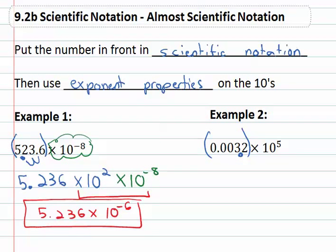The decimal should be after the first significant digit, giving us 3.2 times ten. We move that decimal one, two, three places. And because our number was small, smaller than one, it should be a negative exponent.